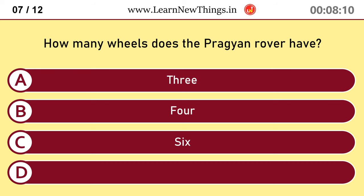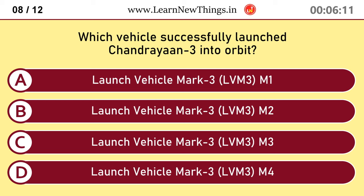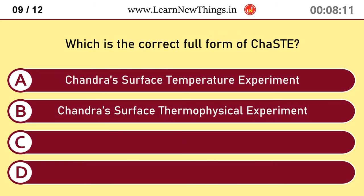How many wheels does the PRAGYAN rover have? 6. Which vehicle successfully launched Chandrayaan 3 into orbit? Launch Vehicle Mk3, LVM3 M4.